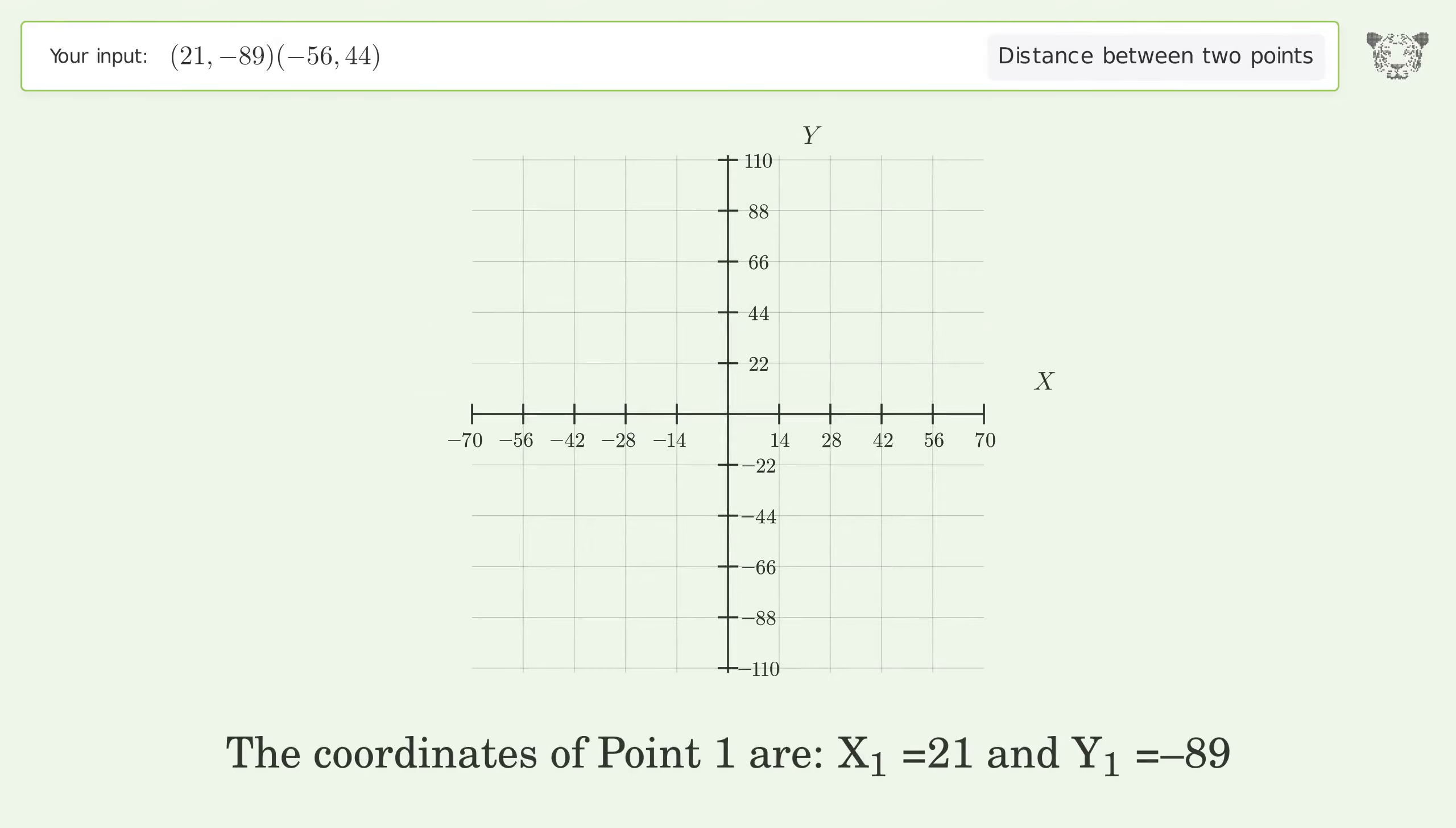The coordinates of Point 1 are x1 equals 21 and y1 equals negative 89. The coordinates of Point 2 are x2 equals negative 56 and y2 equals 44.